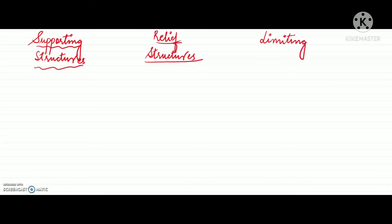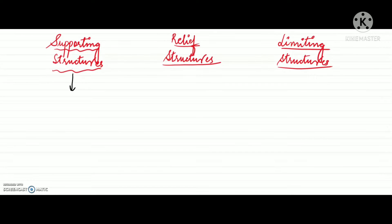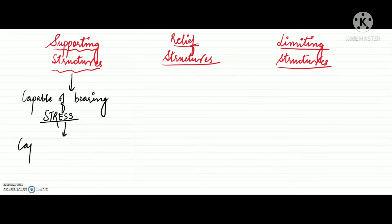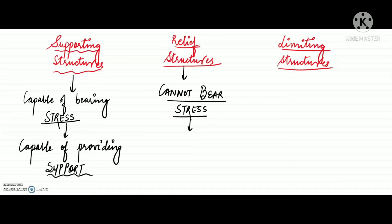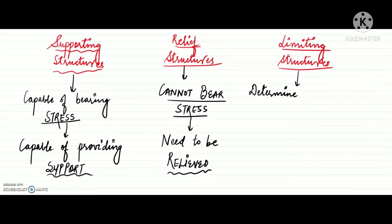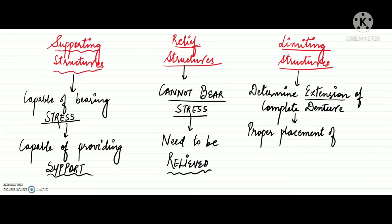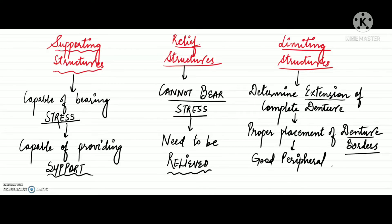A successful complete denture construction is possible only if the clinician understands the difference between supporting structures, relief structures, and limiting structures. Supporting structures are those which are capable of bearing the stresses and hence capable of providing support to the denture. Relief structures are those which cannot bear the stress and hence need to be relieved under the denture. Limiting structures determine the extension of a complete denture within physiologic limits, and knowledge about them is essential for proper placement of denture borders, which enables the denture to achieve a good peripheral seal and contributes to retention.